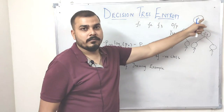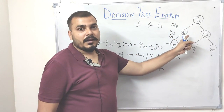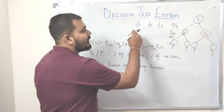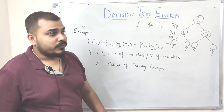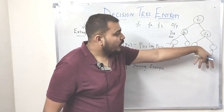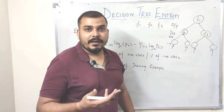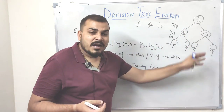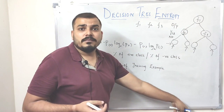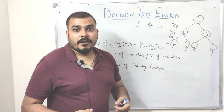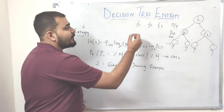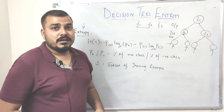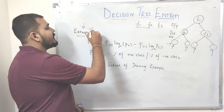We can also proceed with F2 or F3 first. So what is the basic approach to select the right attribute for the splitting purpose? Because if I select it in the right way, I may reach the leaf node very quickly. Otherwise, if I don't select correctly, my tree may go to much greater depth and take much more time. So in order to select the best attribute, we apply something called entropy.